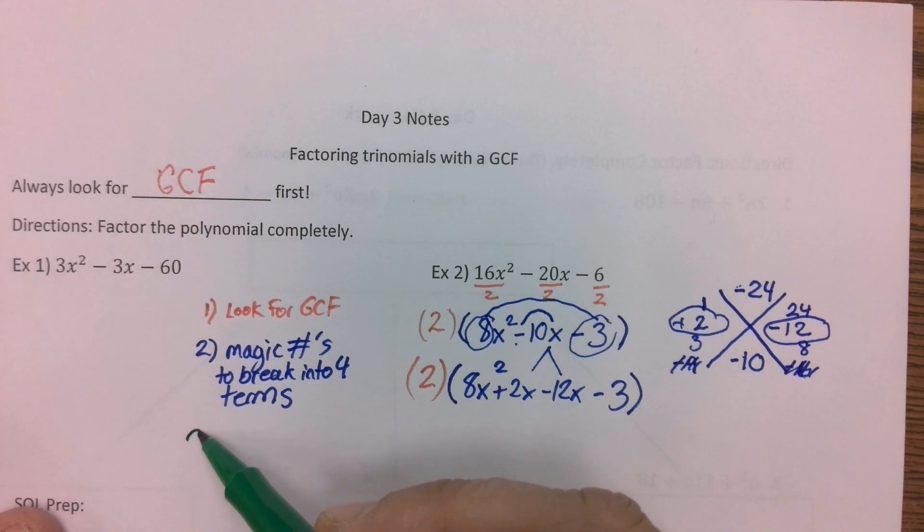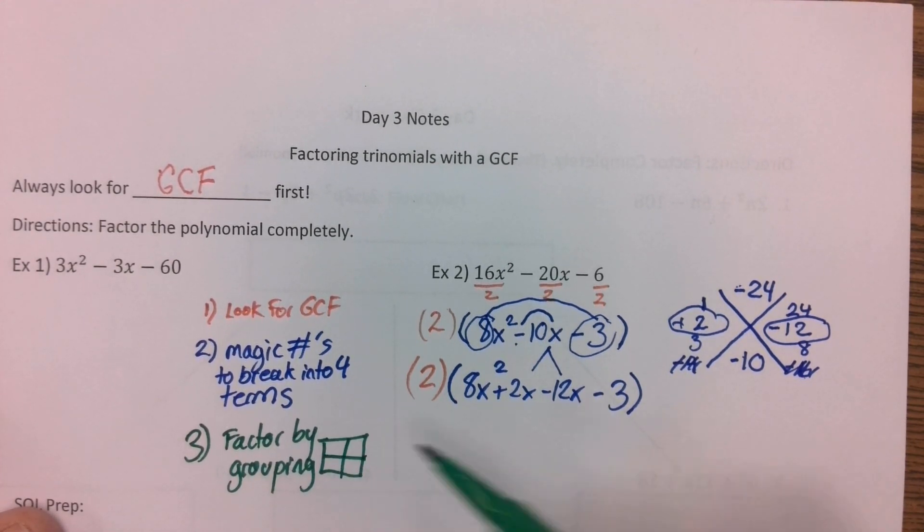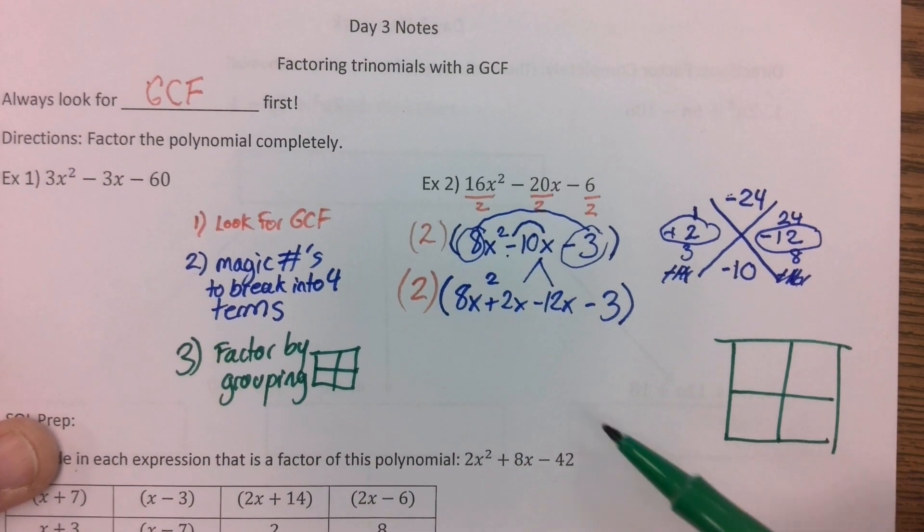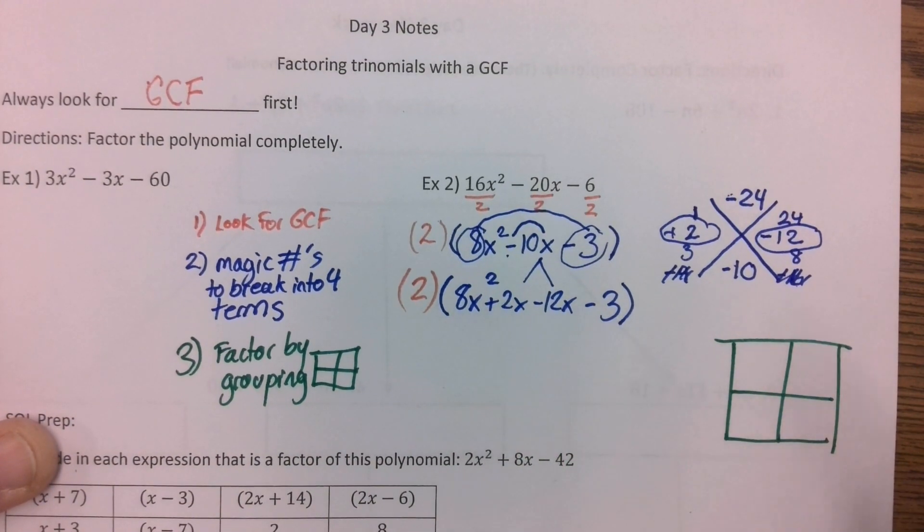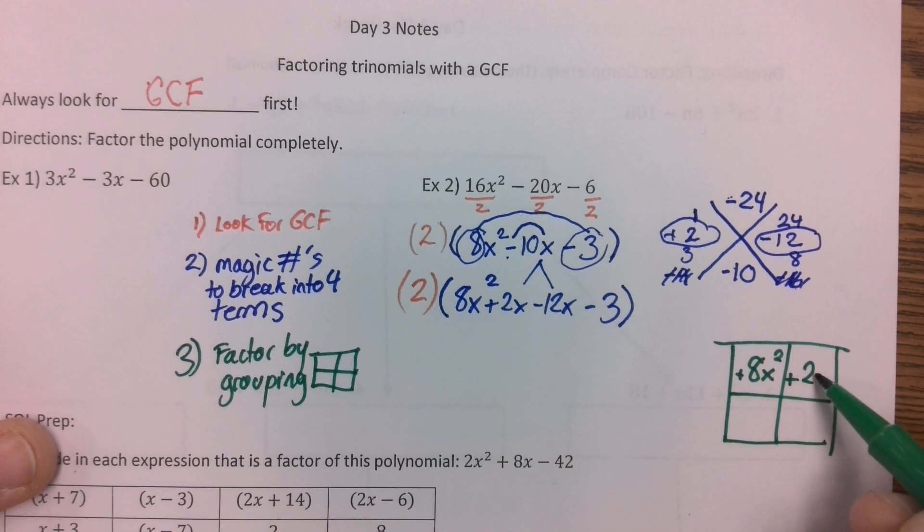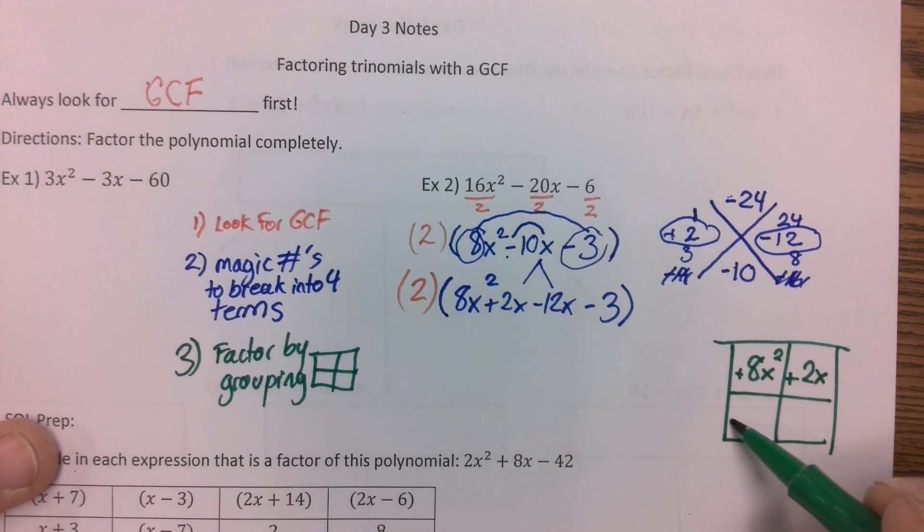I'm going to do step 3, which is factoring by grouping. And we're going to put those 4 into a box and factor out the common factors. So I am going to take this 8x squared and 2x and I'm going to put them in the first row. You'll notice I'm putting in the signs so I don't forget them. Minus 12x and minus 3 go in the second.